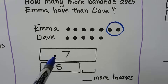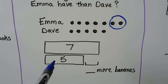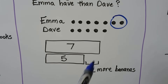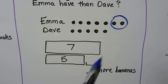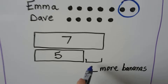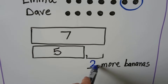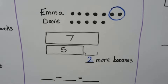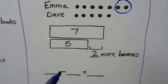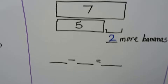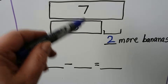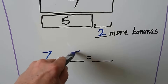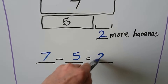We make a big bar for seven and a smaller bar for five. The difference is two — two more bananas. Emma has two more bananas than Dave. We can write a number sentence using our bar model: seven minus five is equal to two.